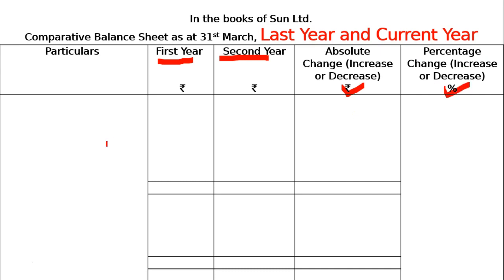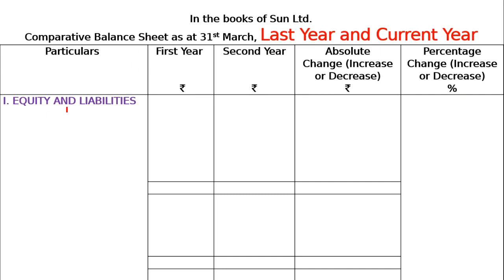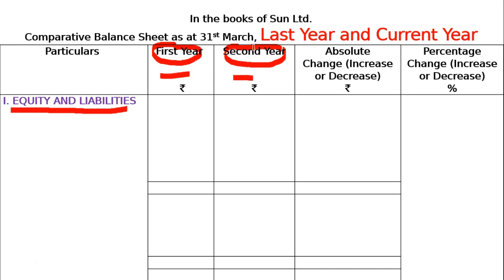Start from the liability side. Write rupees in the first three columns and percentage change in the last column. Instead of writing 'First Year' and 'Second Year,' write the actual years — for example, 2018 and 2019, or 2025 and 2026. The latest year will be the second year, or you can say the current year.